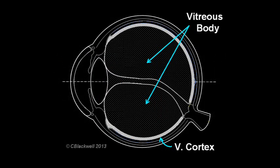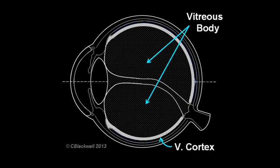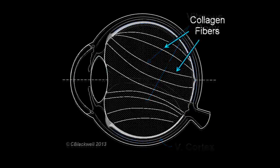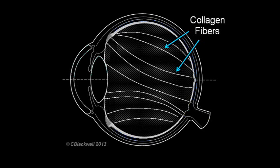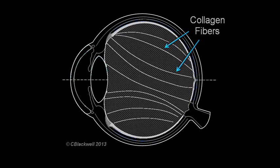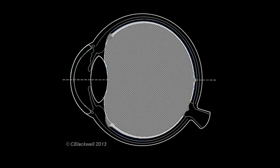The vitreous is the jelly that fills the hollow space in the center of the eye. It is about 98% water with structure given by a matrix of collagen fibers. In youth, the vitreous is quite uniform. But over time, things change.